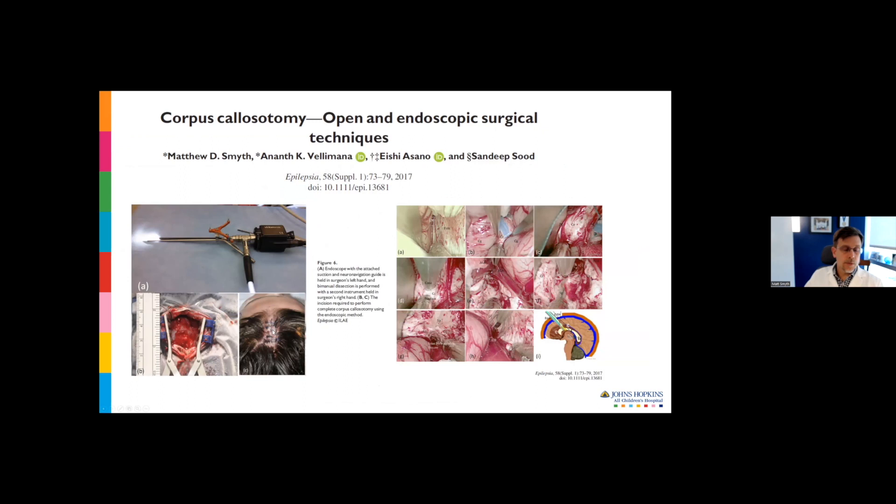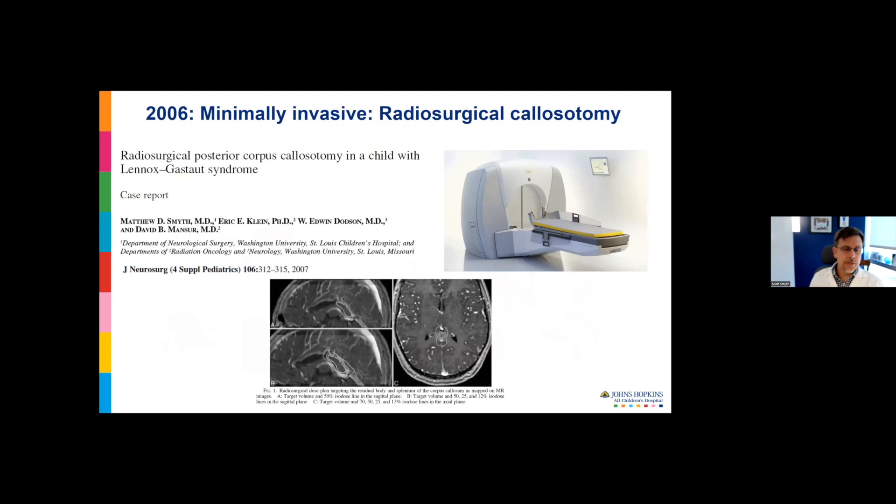He does a very small keyhole craniotomy with a small dural opening, about a two centimeter incision. This is an endoscope that he put together himself, basically connected to a sucker. So you have lights, visualization, the sucker, and he connects it to a neuronavigation platform. He can do bimanual endoscopy visualization and division of the corpus callosum, and he has excellent outcomes with this technique.